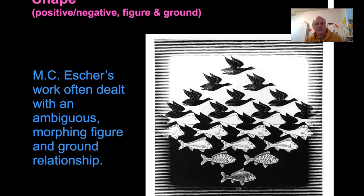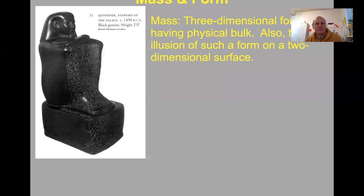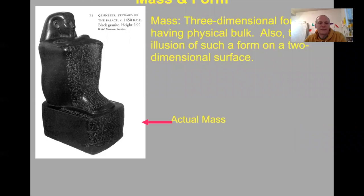Let's look at mass. Mass is three-dimensionality — you can think of it as the expansion of shape. Two dimensions is just shape; three dimensions is mass or form. We can also use mass or form to describe the depiction of three-dimensionality on a two-dimensional surface. A drawing of a cube can still be referred to as mass. A sculpture would be actual mass, whereas a drawing would be implied mass.